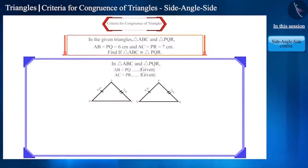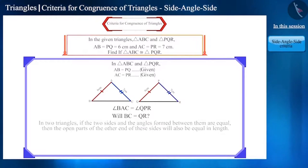If the angles made by these two sides are equal, then will the third side also be equal? Due to the angles being same, the open portions of the other side of these sides will also be equal in length.